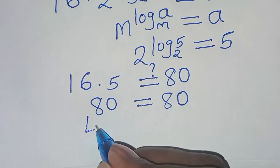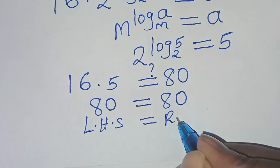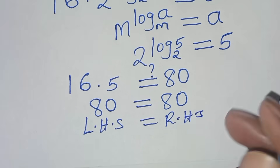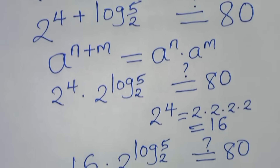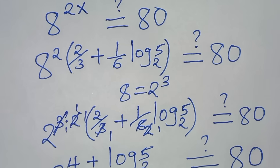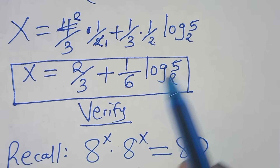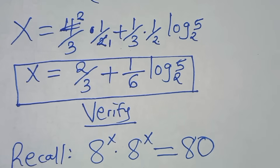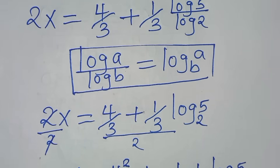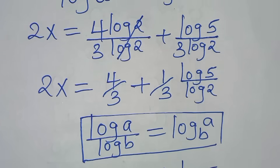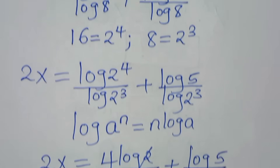So 16 times 5 is equal to 80, which equals 80. The left-hand side is equal to the right-hand side, and therefore the value of x, which is equal to 2 over 3 plus 1 over 6 times log₂(5), satisfies the equation. Kindly like this video and subscribe. See you in the next video.